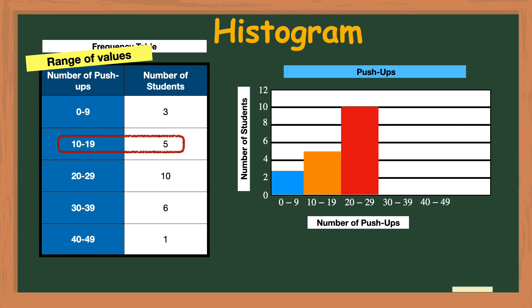Next we'll use a red bar to represent the 10 students who completed between 20 and 29 push-ups. A green bar representing the six students who completed between 30 and 39 push-ups. And finally a yellow bar to represent that one impressive student who is able to complete between 40 and 49 push-ups.